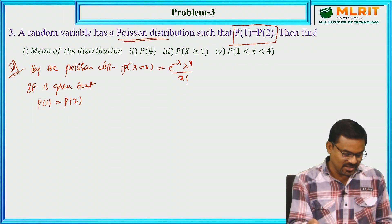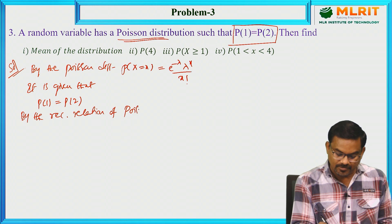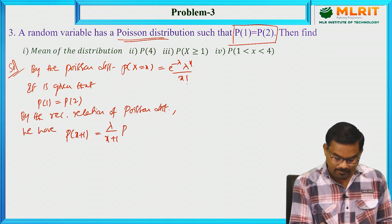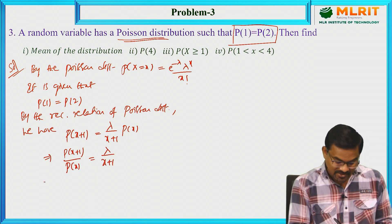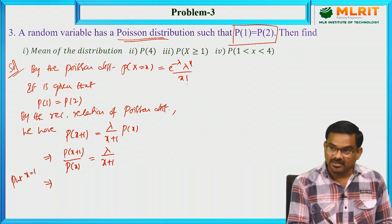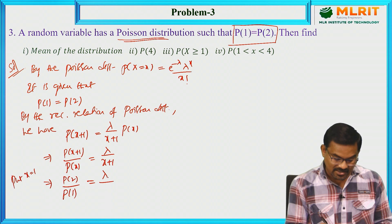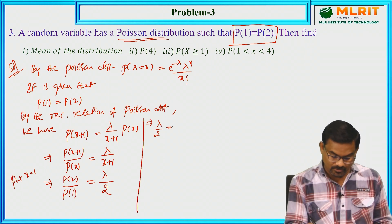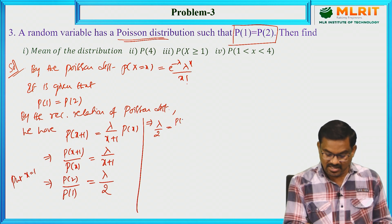We can use the direct formula or the recurrence relation. By the recurrence relation of Poisson Distribution, P(x+1) = (λ / (x+1)) · P(x), which implies P(x+1)/P(x) = λ/(x+1). Putting x = 1: P(2)/P(1) = λ/2. Since P(2) = P(1), we get λ/2 = 1, therefore λ = 2.